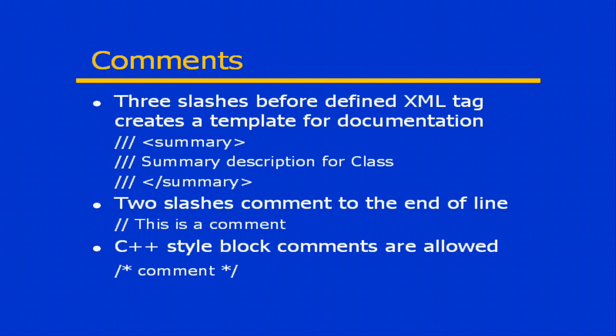Another approach for commenting your code is to use the standard line comment — two forward slashes followed by text — which will be a comment from that point to the end of the line. C++ block style comments are also allowed by using the forward slash star, star forward slash to open and close your comments. Anything found within those different operators is considered a comment by the compiler.